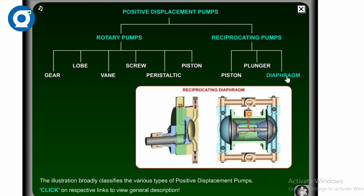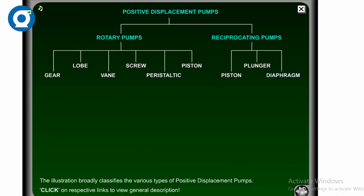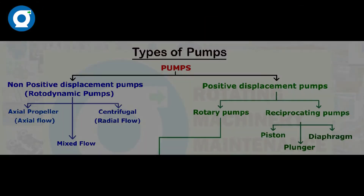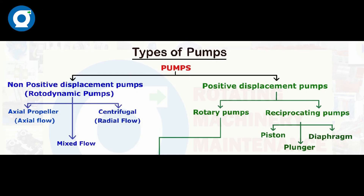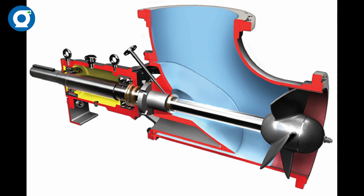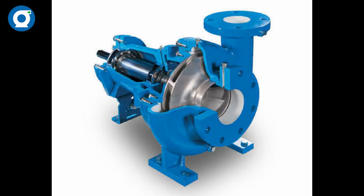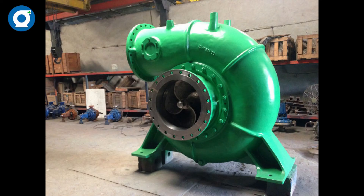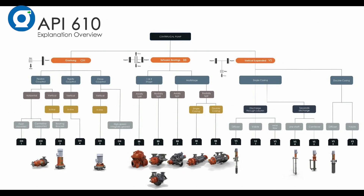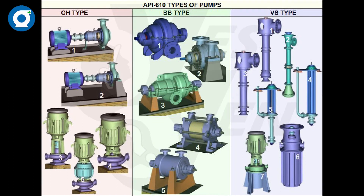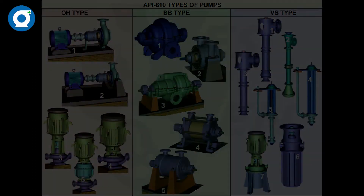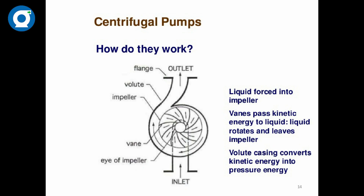In non-positive displacement pumps, we have three types: axial flow or propeller type pumps, centrifugal pumps or radial flow pumps, and mixed flow pumps. In centrifugal pumps, the API standard provides a lot of variety of pumps based on the API 610 standard. These are the non-positive displacement pump types.